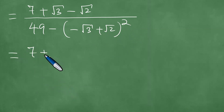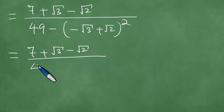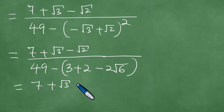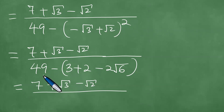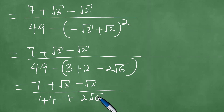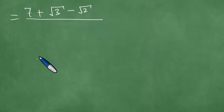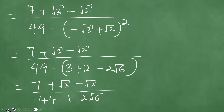The numerator therefore becomes 7 plus the square root of 3 minus the square root of 2, divided by 49 minus. If you square these, it becomes 3 plus 2 minus 2 times the square root of 6. So in the end what we're getting is 7 plus the square root of 3 minus the square root of 2, divided by — 3 plus 2 is 5, and 49 minus 5 is 44, plus 2 times the square root of 6.